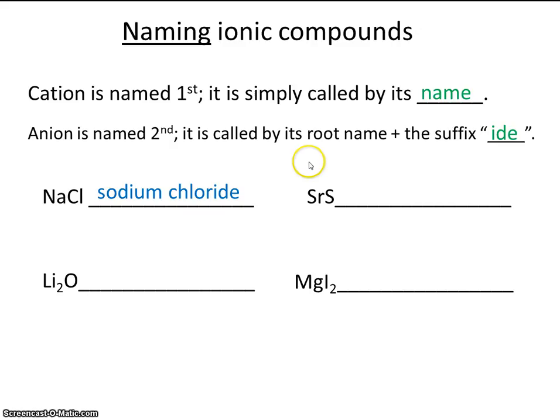Same thing here. We'll name this element first, and then this element second. Notice that the cation traditionally comes first, and the anion comes second. So essentially, you're providing the name of this element, which is strontium, and then you're looking at this element, and then just adding the suffix -ide. So this is strontium and sulfur. So this would be called strontium sulfide.